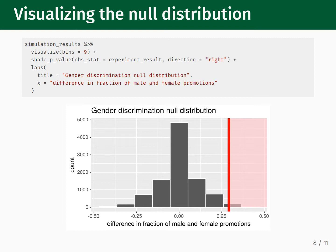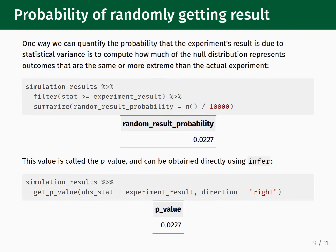The shaded red region quantifies how likely it is that a random chance model would generate our observed experimental result. This is not difficult to calculate: we count how many simulations gave a result the same or more extreme than the experiment and divide by 10,000, the total number of simulations. We can do this manually using filter and summarize, which tells us that 2.27% of our simulations were the same or more extreme.